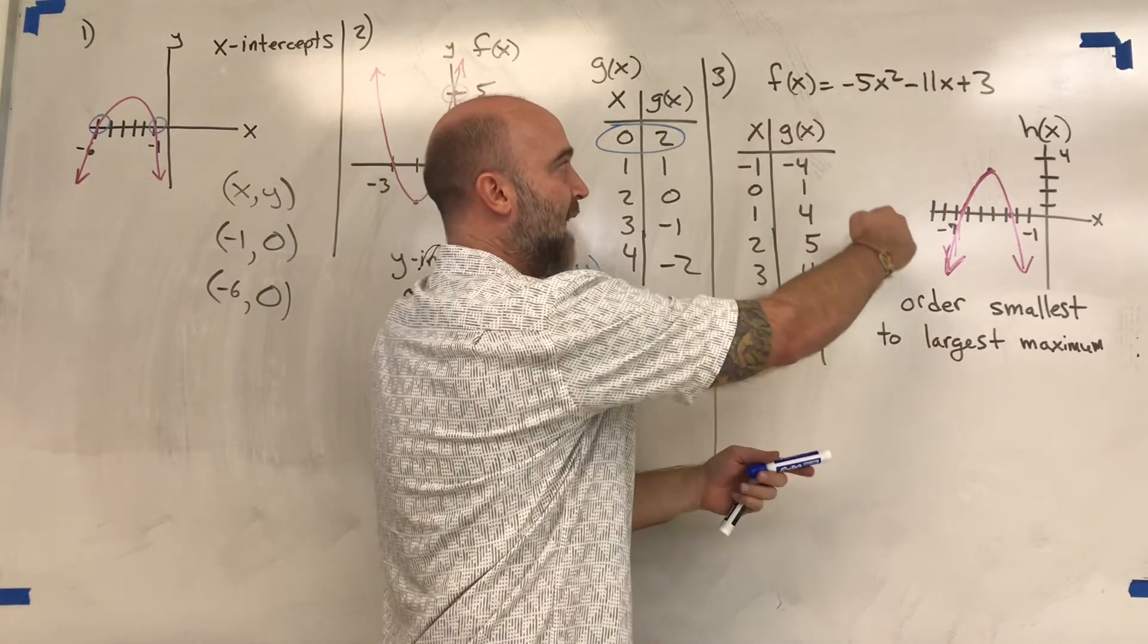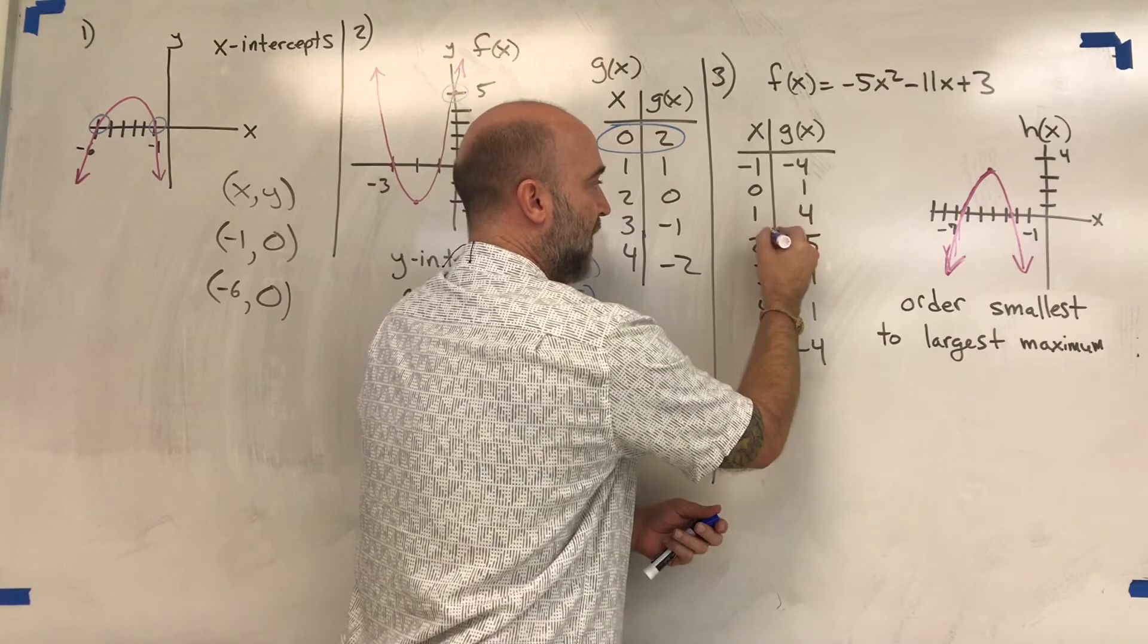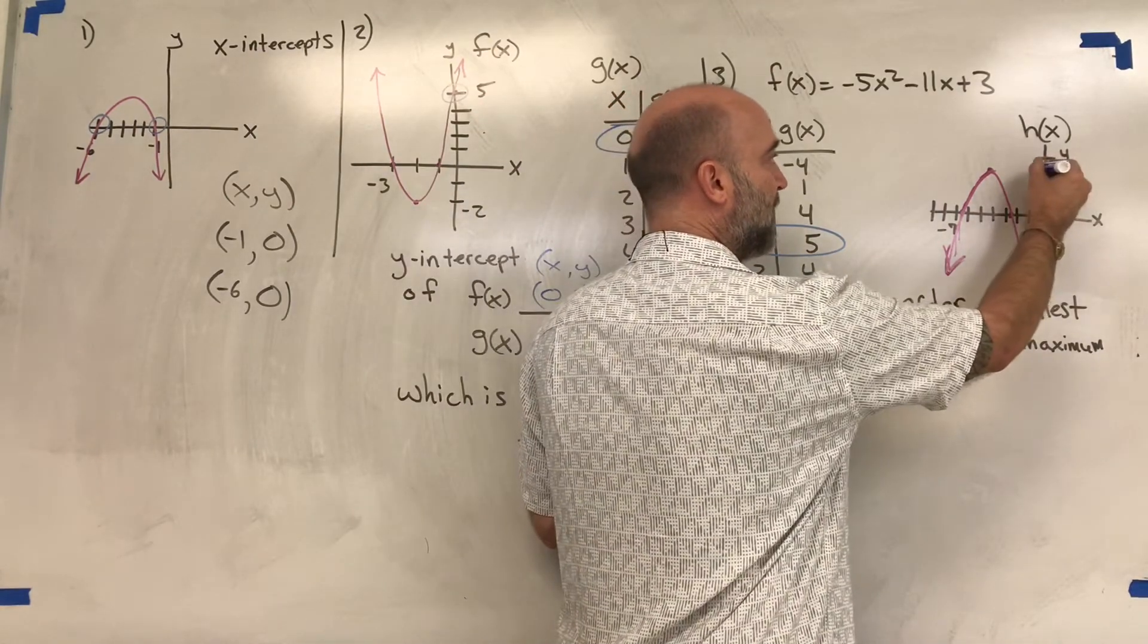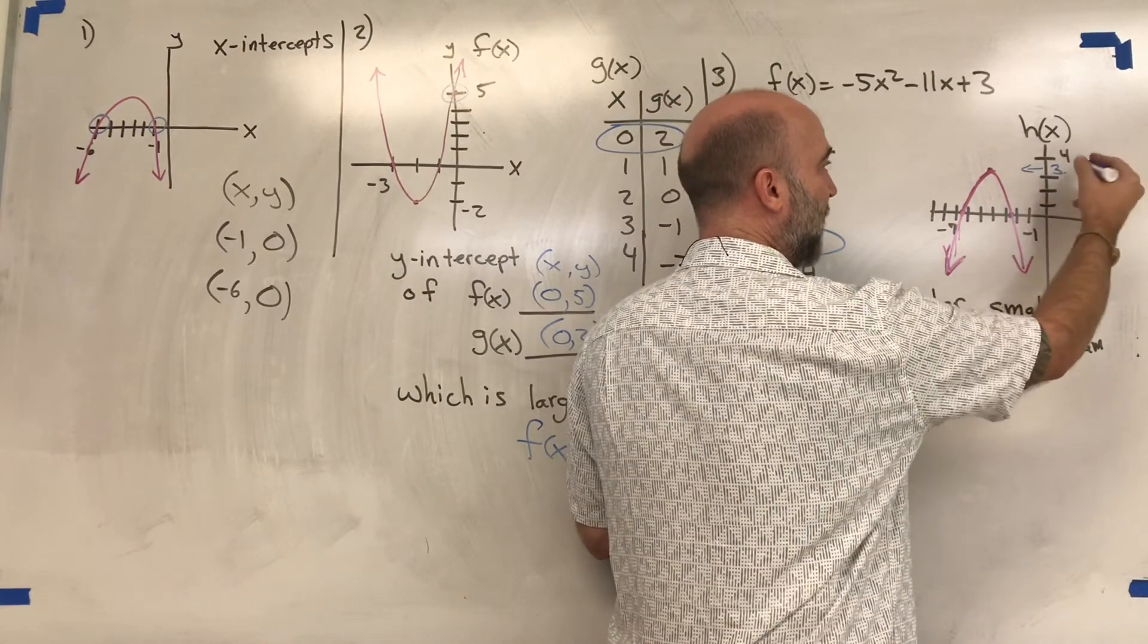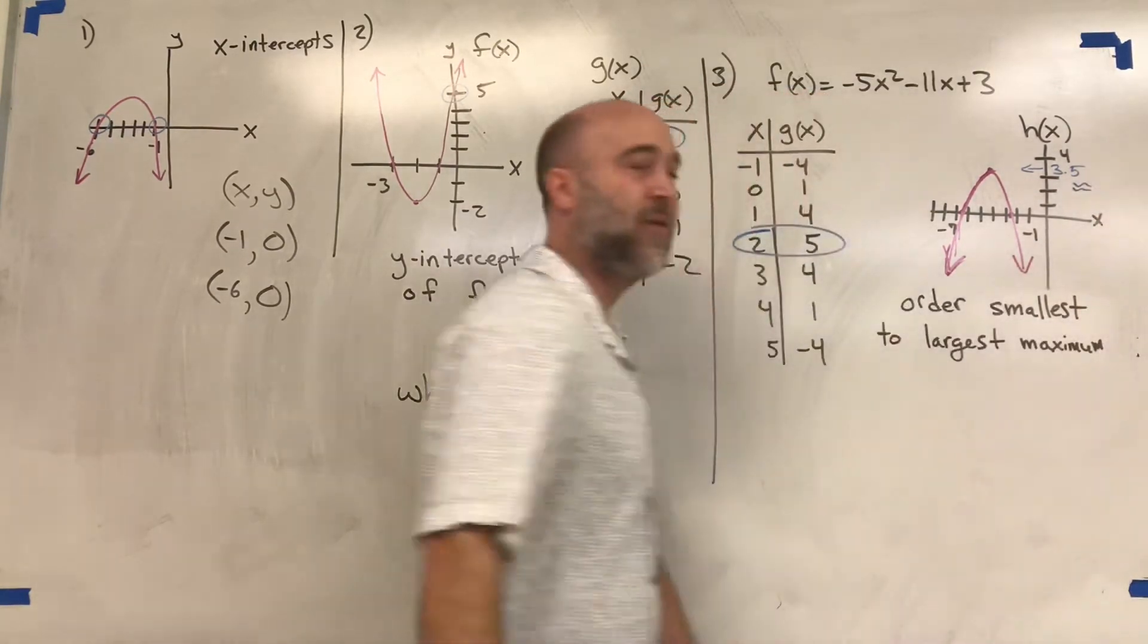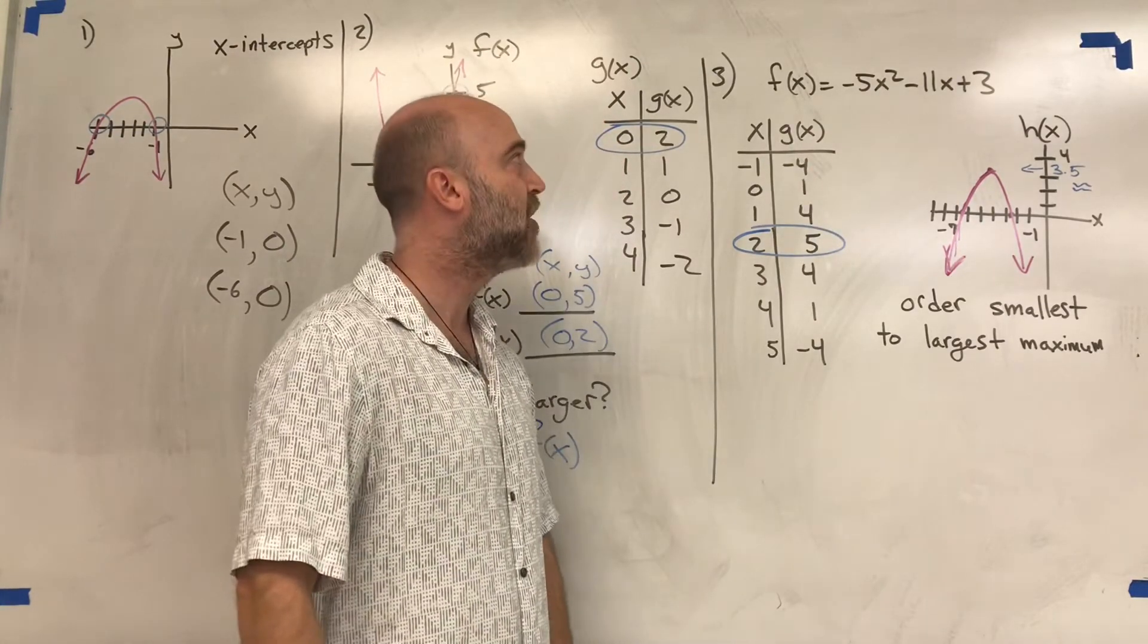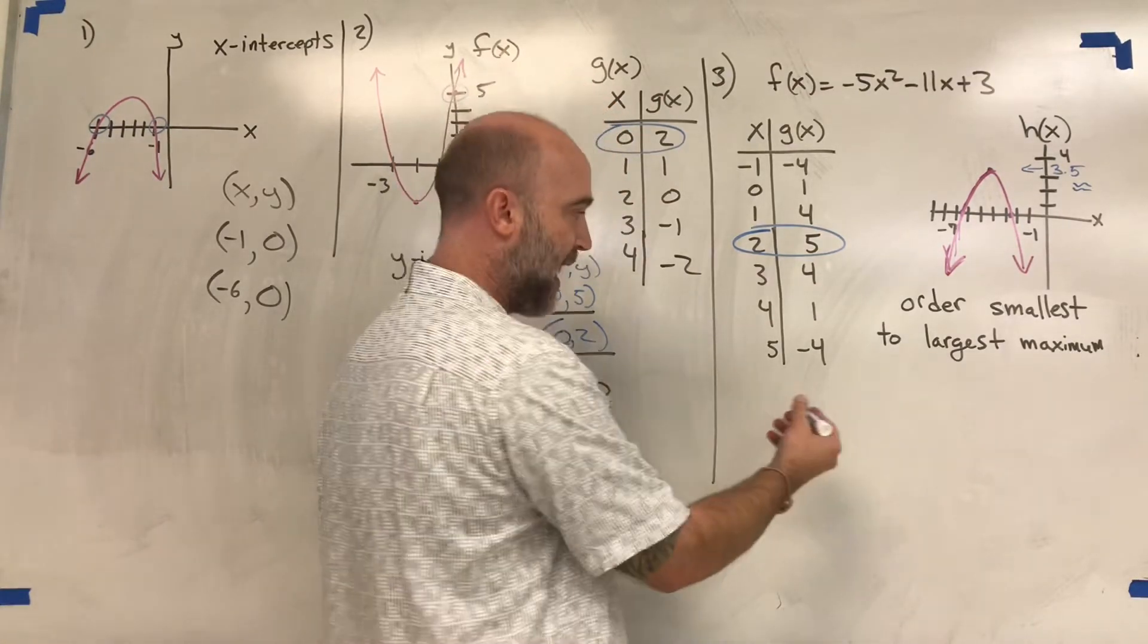Since it has that symmetry, this point is the maximum for g(x). This point here, we're mainly concerned with the y-values, so that's about 3.5. That's an approximate 3.5 on the y-axis for that maximum. The more tricky one has the function only in equation format, so for the equation format we need to look at the vertex.